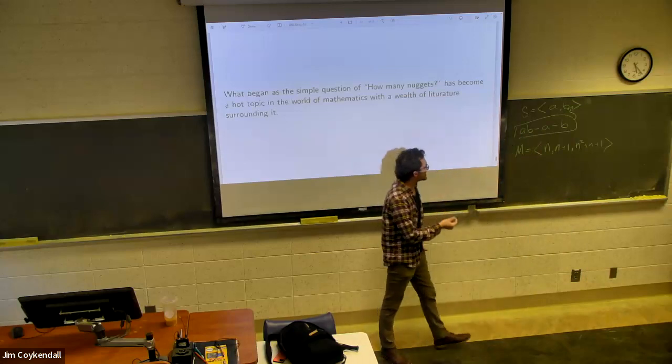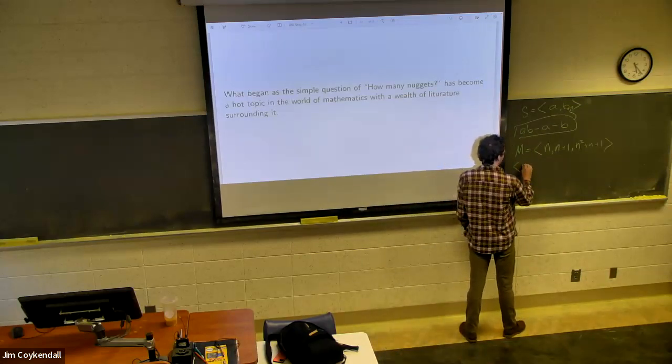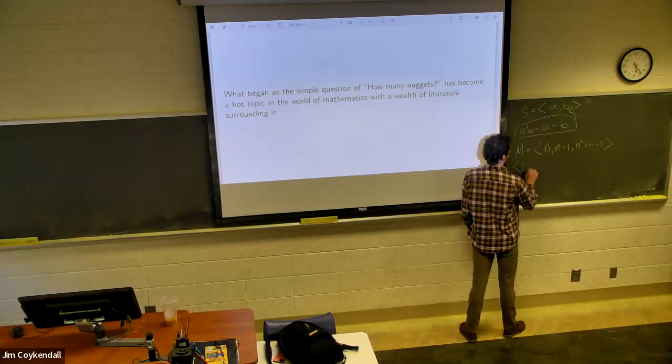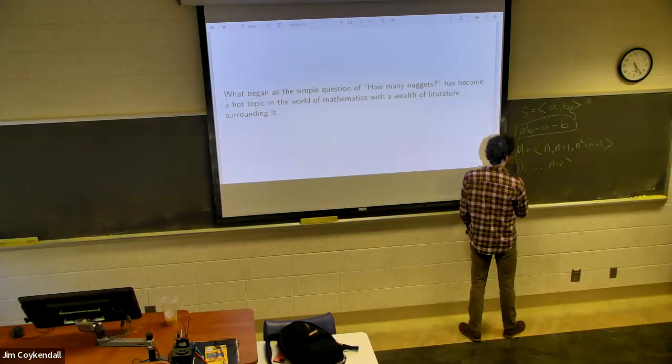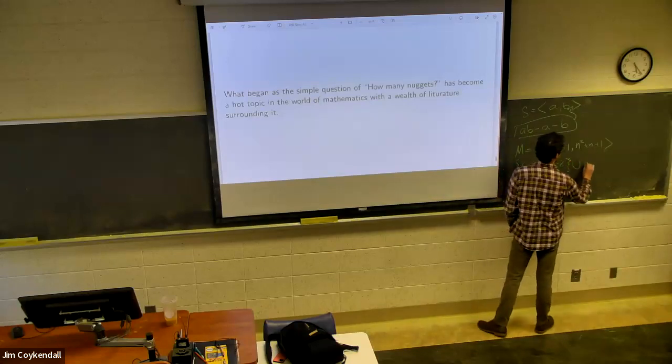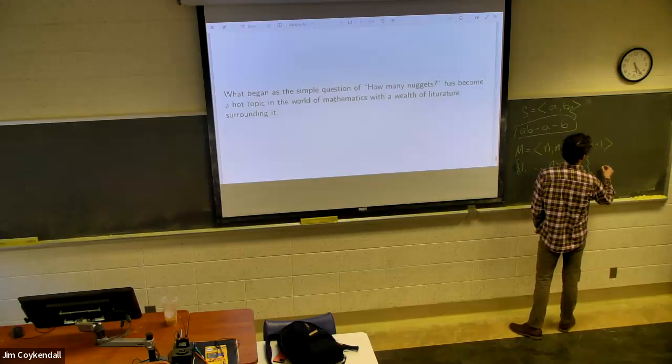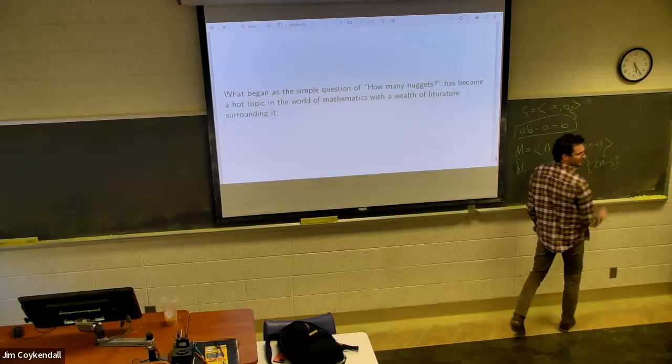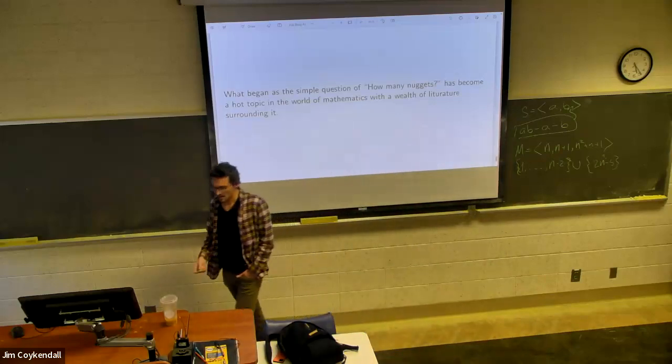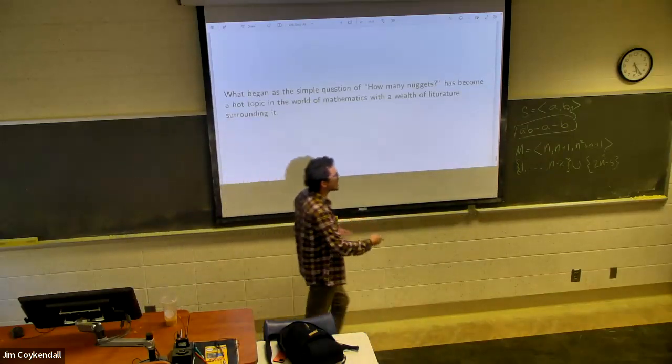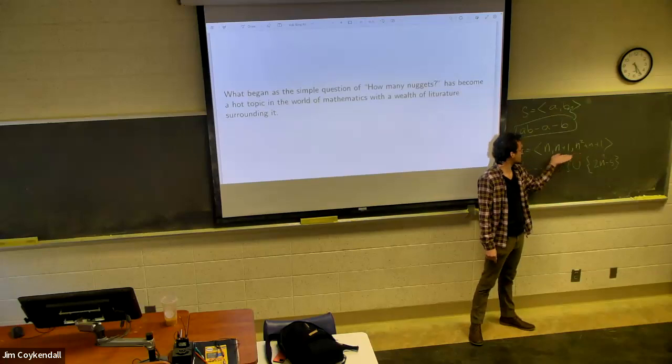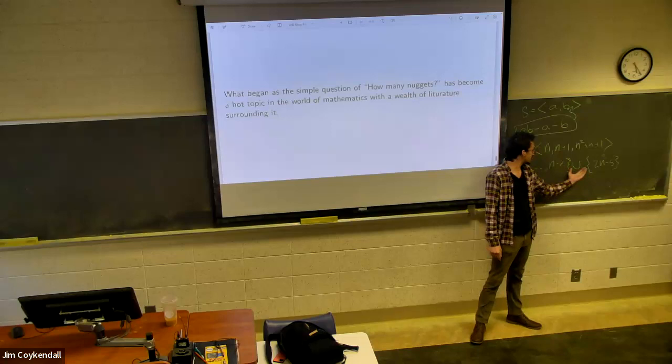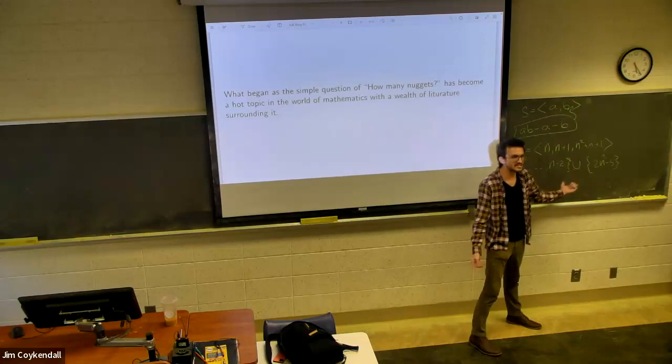If you do the delta set there, what you end up with is, I believe it's 1 to N minus 2, union, like 2N minus 5. I'll put another little question mark over that because I'm not 100%. But the reason that's really cool is saying, okay, since this here is dependent on N, you can find numerical monoids in this family with an arbitrarily large gap between these two here, which turns out to be pretty cool.